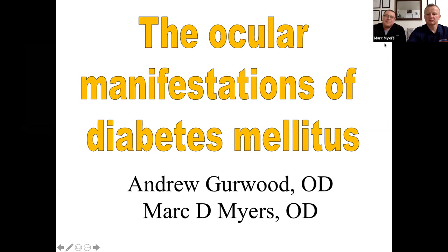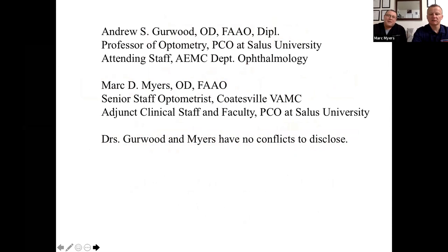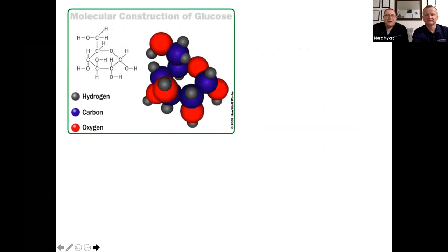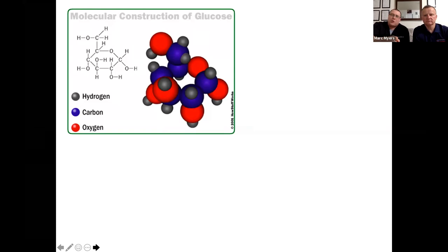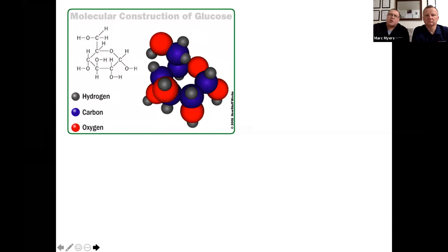This is a glucose molecule. Think of the coin laundry — the machine doesn't take dollar bills, it takes quarters. Glucose is quarters. When you eat, you eat dollar bills — you eat tens and twenties — and you chew it, swallow it, and it gets broken down into smaller components. The component that can get into your cells to make energy is glucose. Glucose runs the whole show; glucose is the body's gasoline.